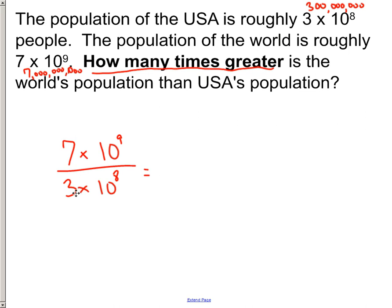Well, 7 divided by 3 is going to be roughly, I believe it's like 2.3 or something like that. And 9 minus 8 is 1. So roughly, how many times greater? Roughly about 23 times greater.